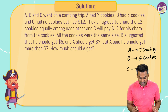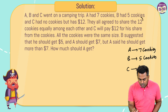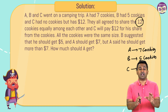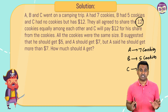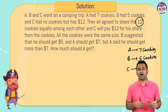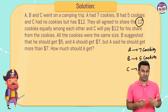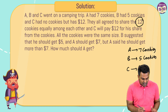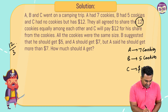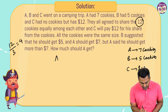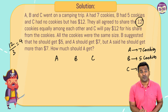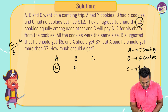They all agreed to share the twelve cookies equally among each other. So the first thing: all twelve cookies are going to be divided among A, B, and C — that's three people. Twelve divided by three gives us four, so A, B, and C are each going to have four cookies after the division.